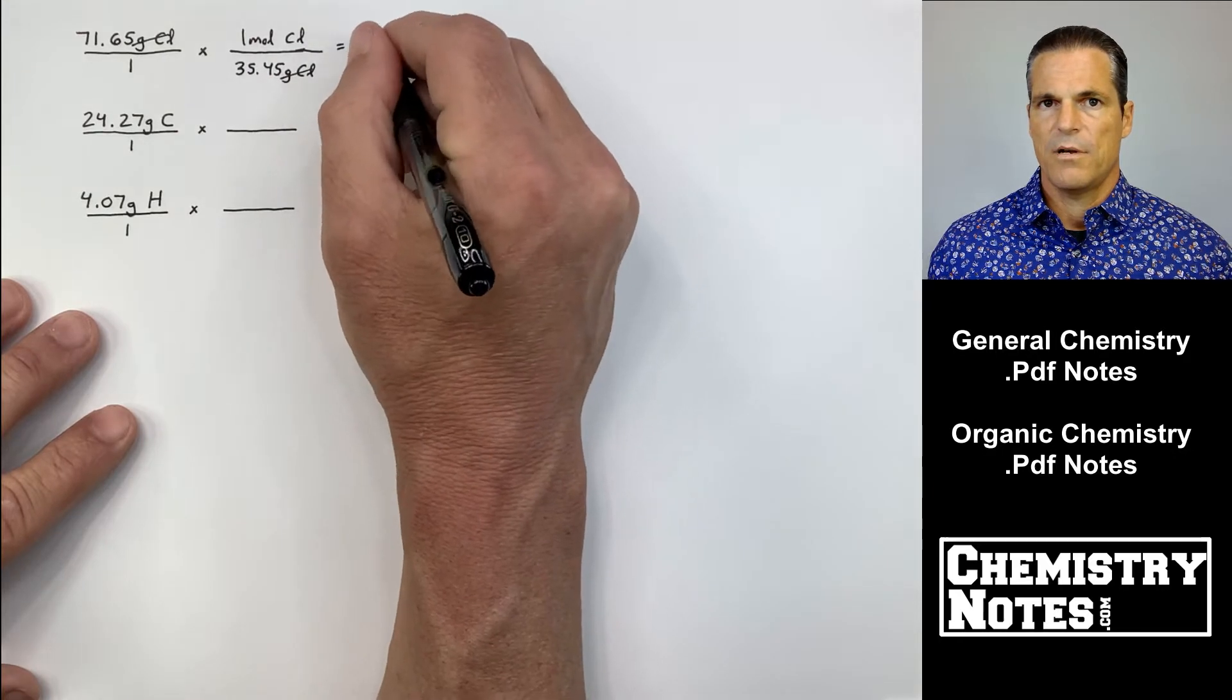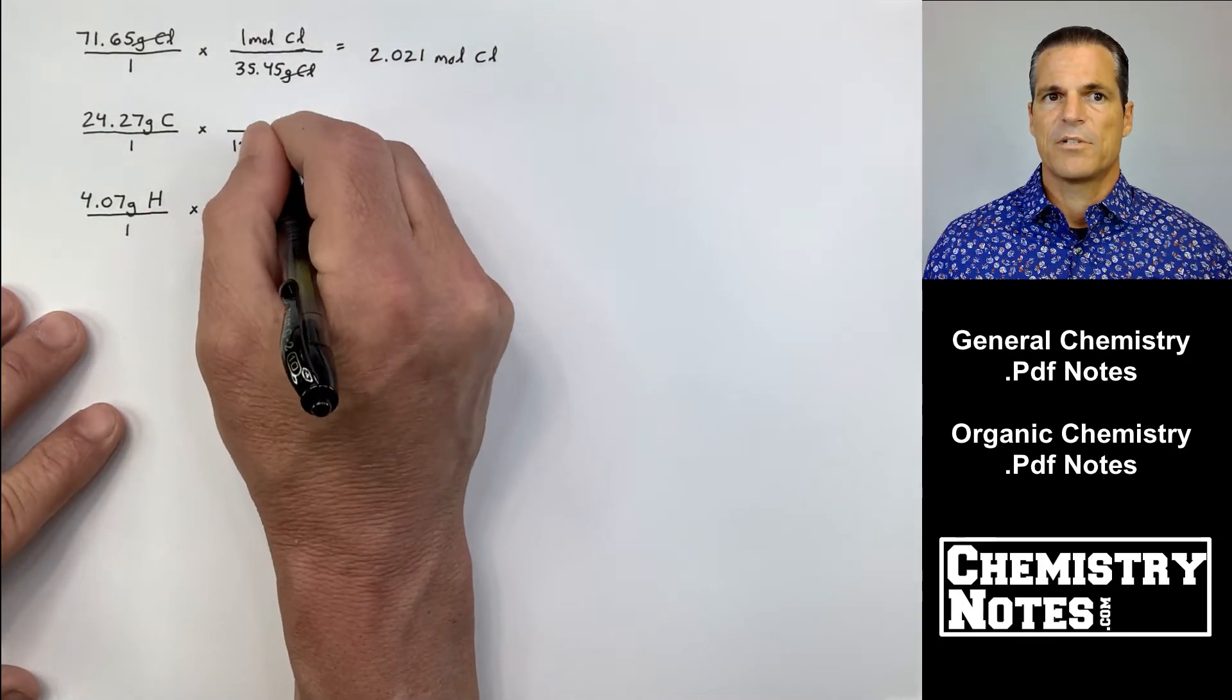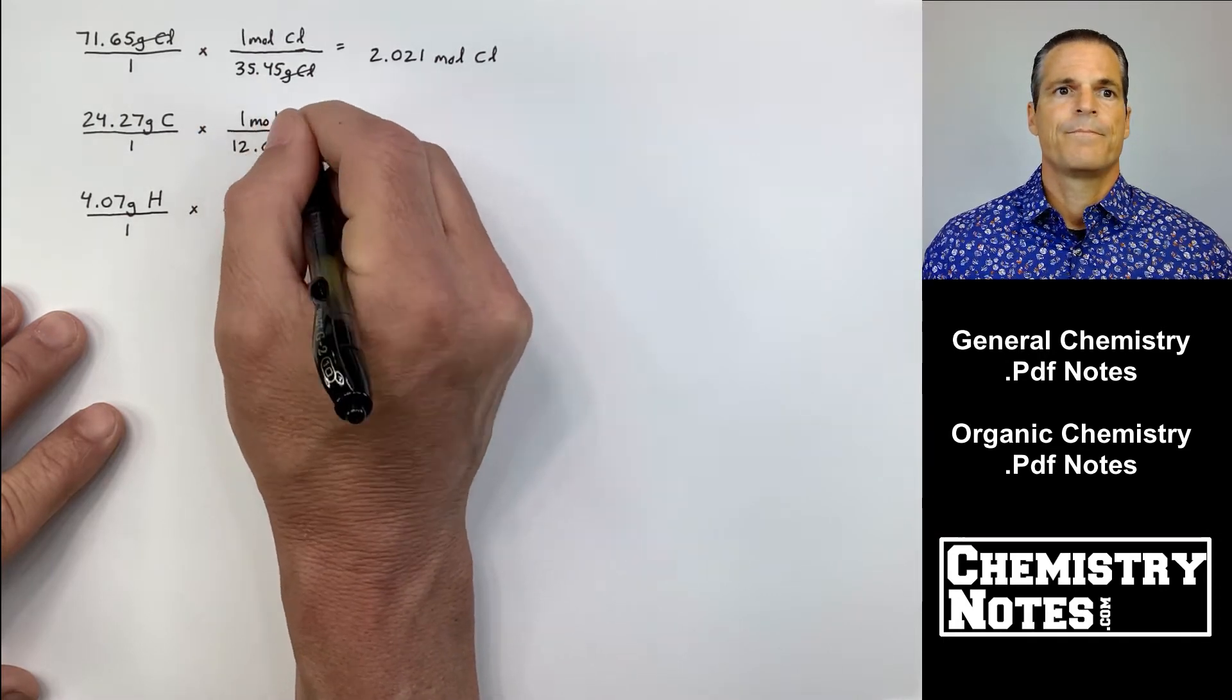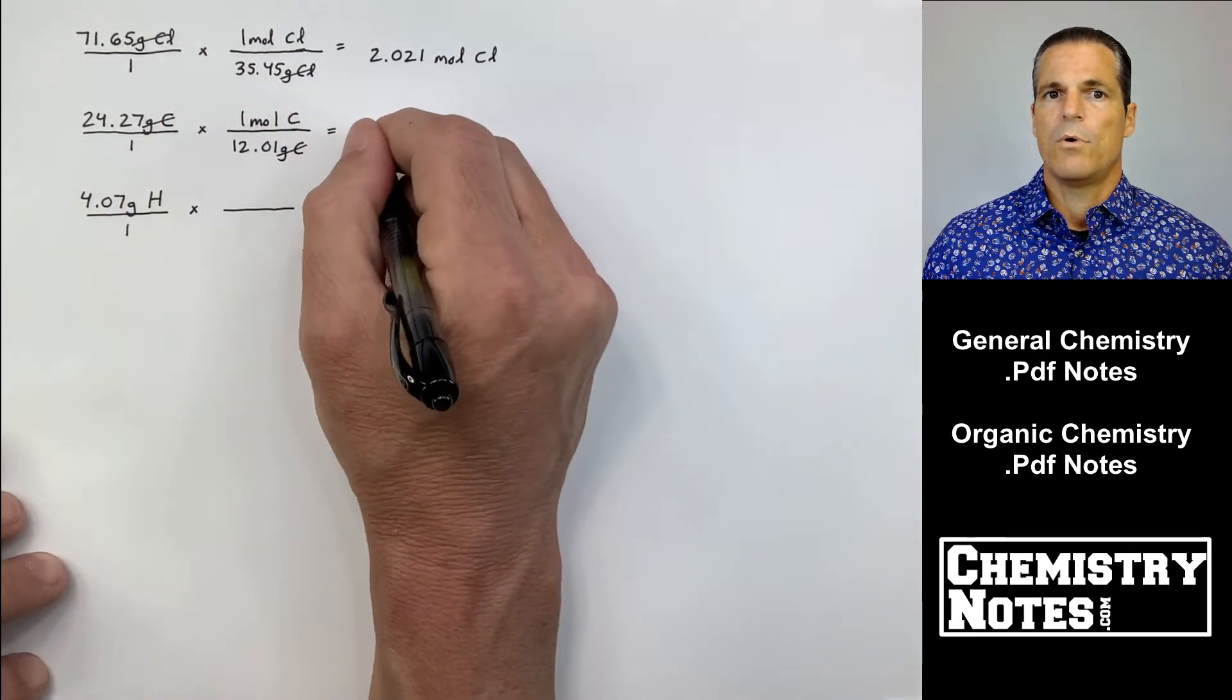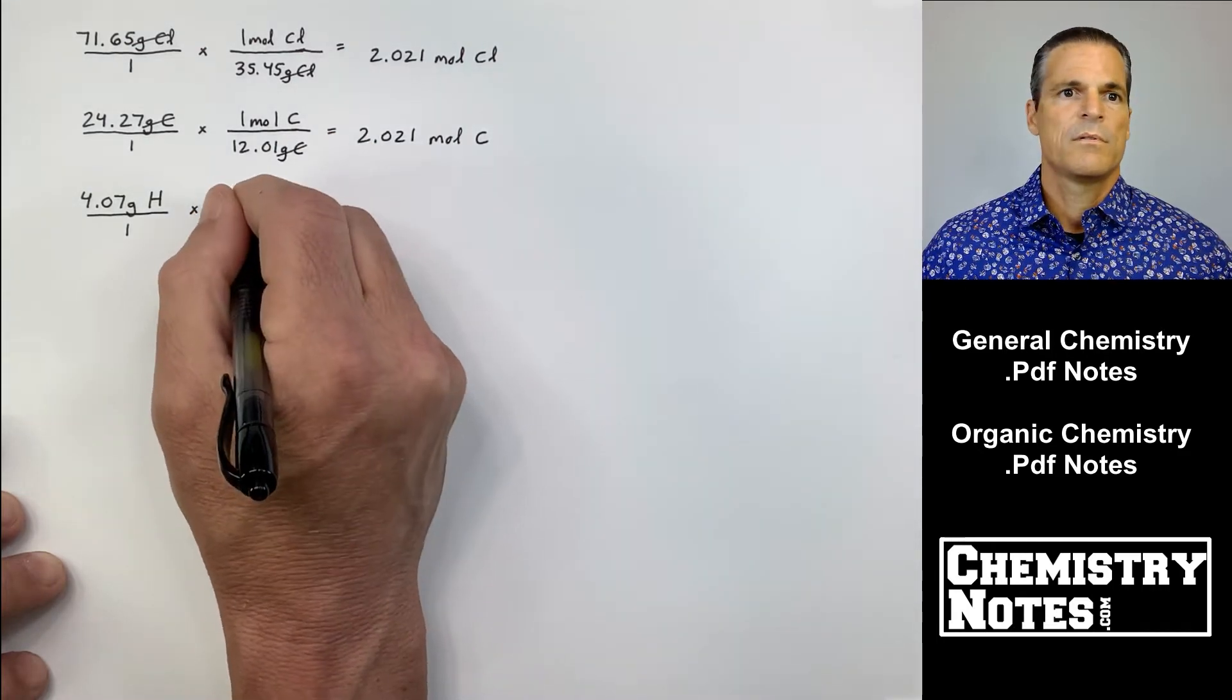Convert all the grams, all three values in grams, to moles by dividing by the respective atomic masses. We end up with 2.021 moles of Cl, 2.021 moles of carbon, and